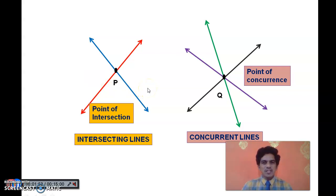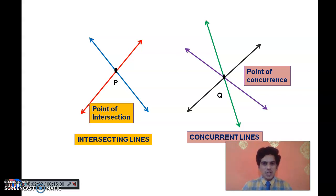Now, suppose two lines do not have any common point — then what are those lines called? Exactly, they are called parallel lines. So lines without a common point are called parallel lines.